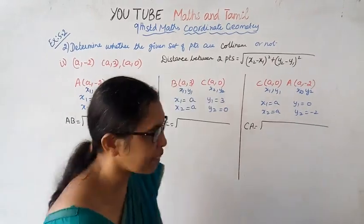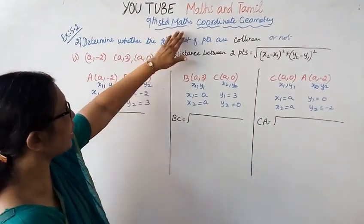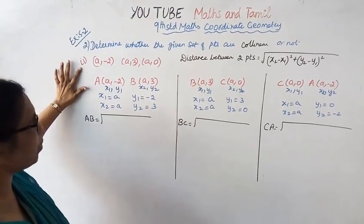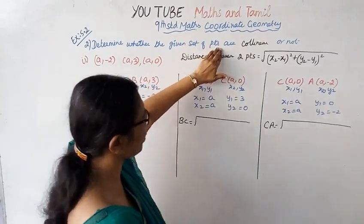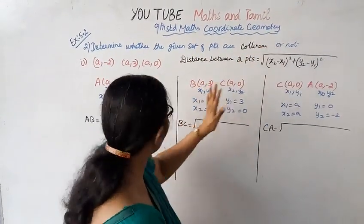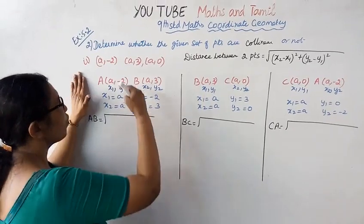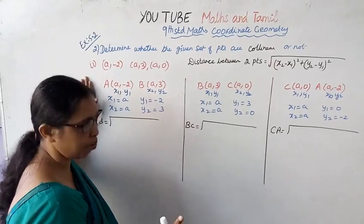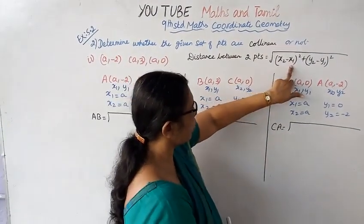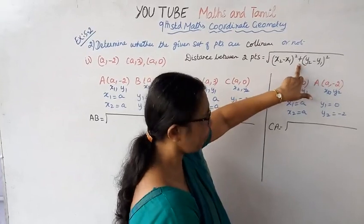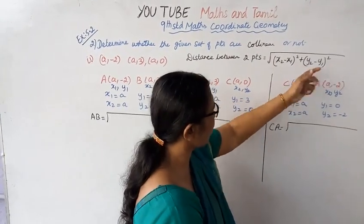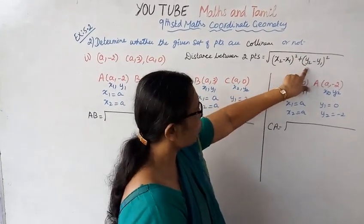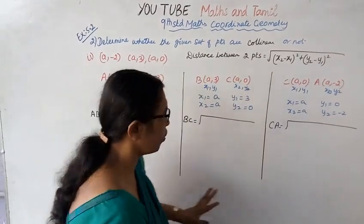Hello students, welcome to Max and Tamil channel. 9th standard, coordinate geometry exercise 5.2, second subdivision. Determine whether the given set of points are collinear or not. In exercise 5.2, we use the distance between two points formula: root of (x2 minus x1) whole square plus (y2 minus y1) whole square.